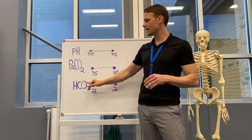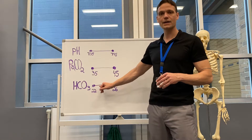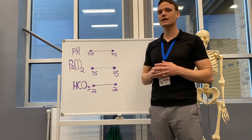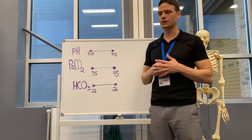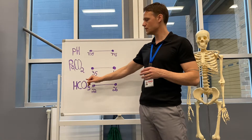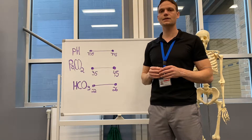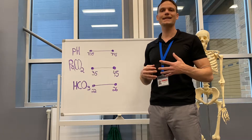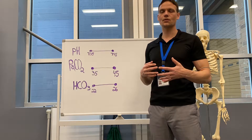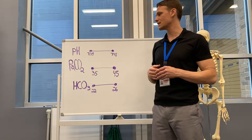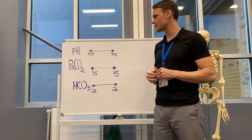Lastly, we have our HCO3, with a normal of 22 to 26. This is looking at the metabolic issue. When there is an issue with our HCO3, it typically has to do with our kidneys — they're trying to compensate or they're not able to compensate, and you'll see a shift in the pH with that.